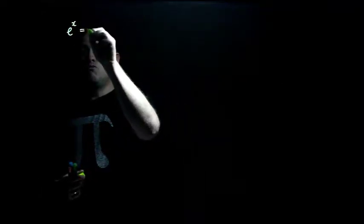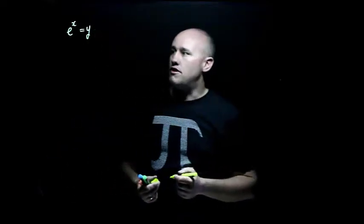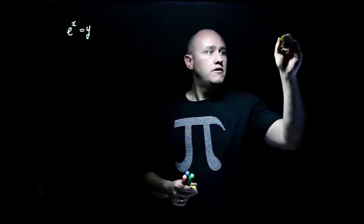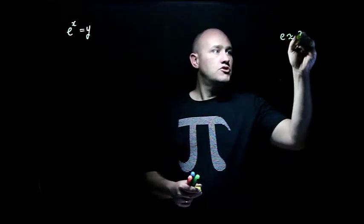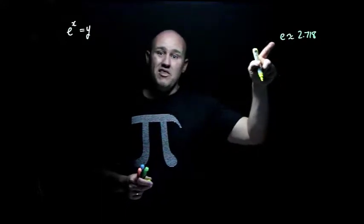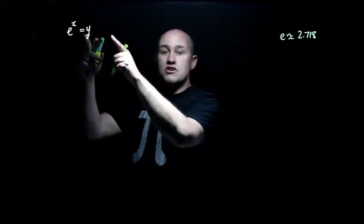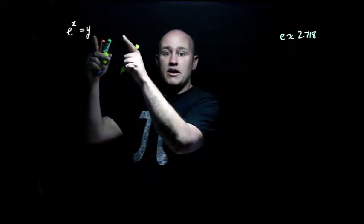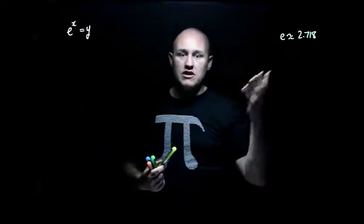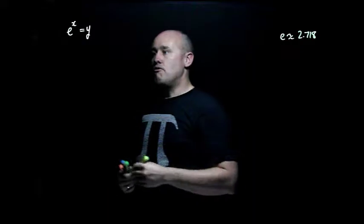So if we start with a function, a standard function, say e to the x equals y, or y equals e to the x, whichever way around, this is an exponential function. And remember that e is approximately equal to 2.718. And just to summarize about e, that's the number such that if you sketch this function and its gradient function, it's actually exactly the same. It's a really special number that occurs naturally like pi.